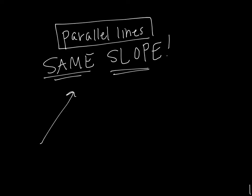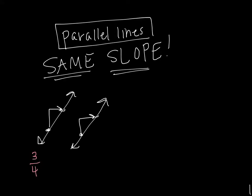So if two lines are parallel, then that must mean that when you count their rise over run, it must be the same fraction — the same slope. For example, if this line right here has a slope of three-fourths, then this line right here also has a slope of three-fourths. Same slope is what makes them parallel.